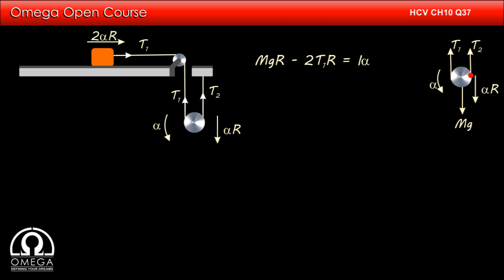Now, net torque must be equal to moment of inertia into angular acceleration. Therefore, capital Mgr minus 2T1r is equal to I into alpha. The moment of inertia of pulley about our axis is 3 by 2 capital MR square.